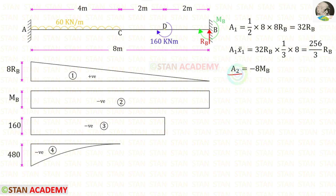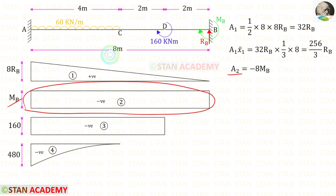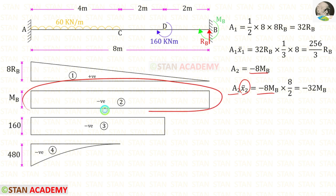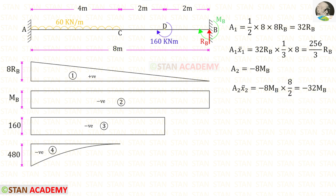Now let us find Area 2. We know that it is a rectangle. When we multiply MP with 8, we get Area 2 = 8MB, and we know it is negative. For Area 2 × x̄₂, the centroid of a rectangle lies at the center, so we divide the length 8 by 2 to get the centroid distance. For Area 2 × x̄₂, we will get minus 32MB.